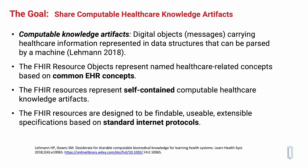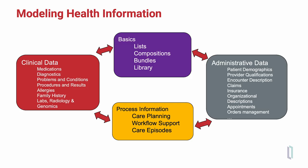FHIR resources are designed to be findable, usable, and extensible specifications based on standard internet protocols. To look at how FHIR resources are used to model healthcare information, there are several different categories of resources. The basic resources include different methods to represent data for human consumption, including the FHIR list resource, FHIR compositions or documents, FHIR bundles that group together a set of related FHIR resources, and the library resource that contains other FHIR artifacts.